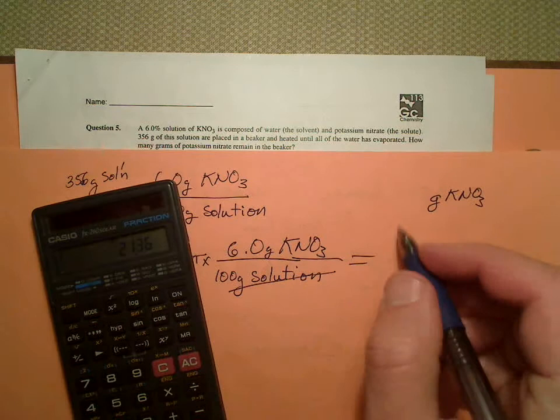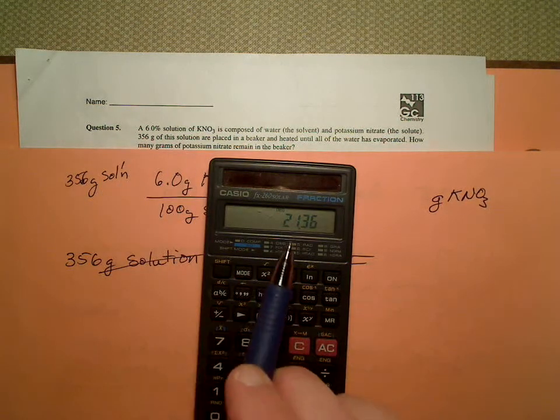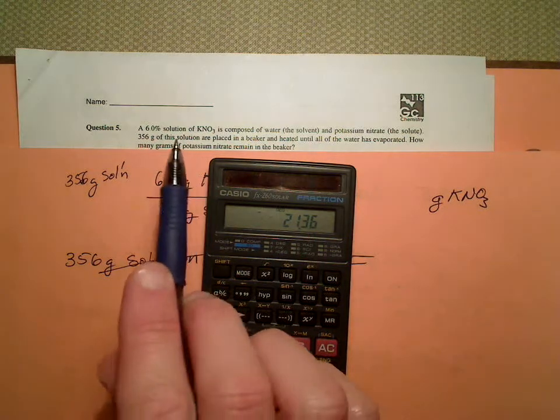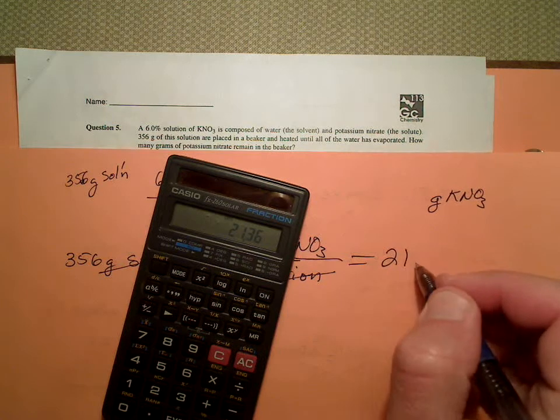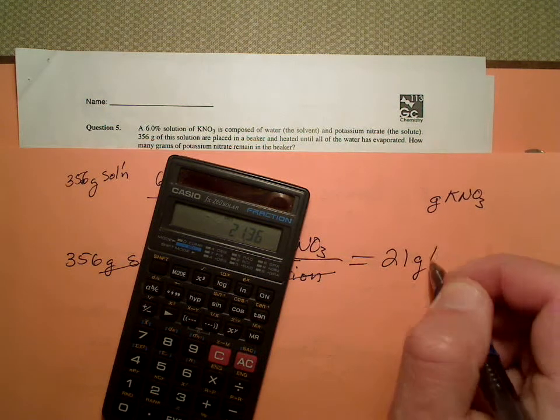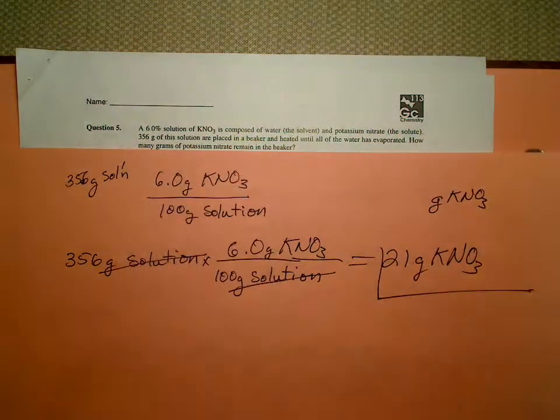We get 21.36, but we need two significant figures, so 21 grams of potassium nitrate.